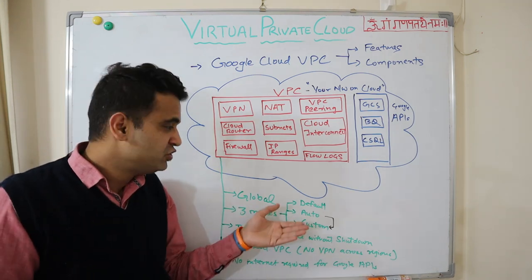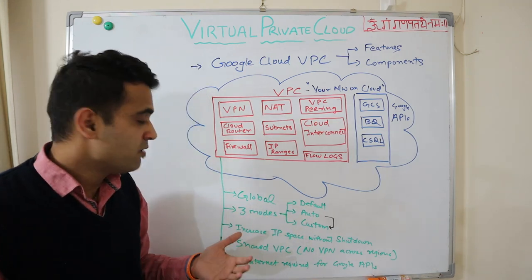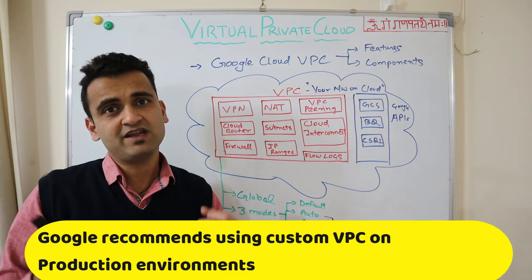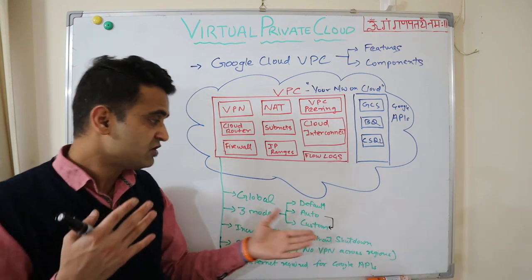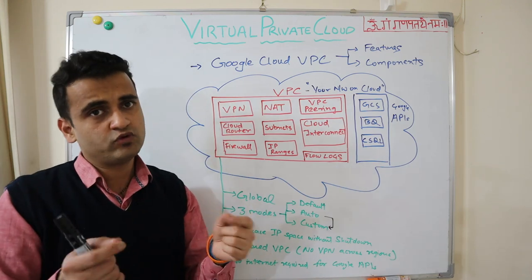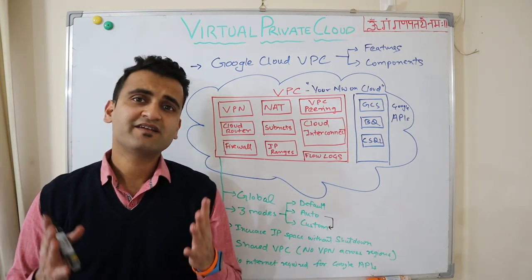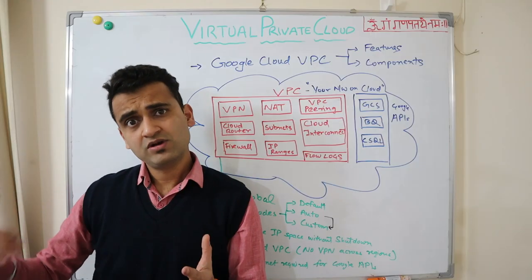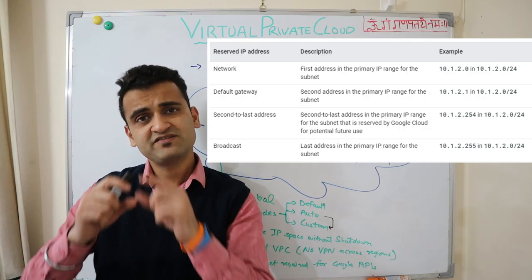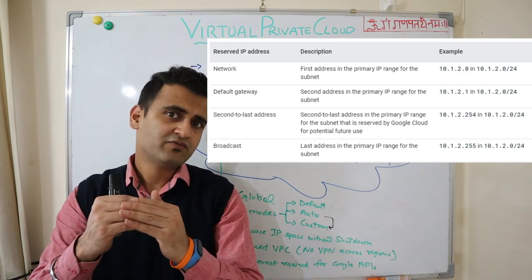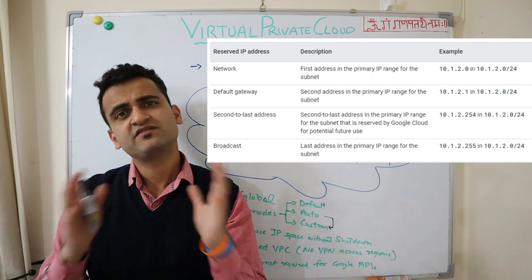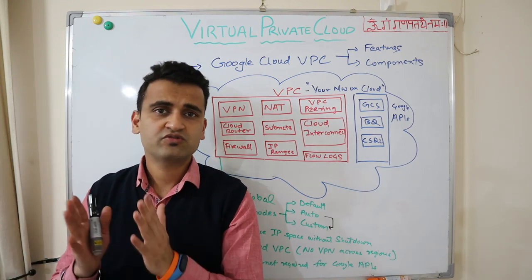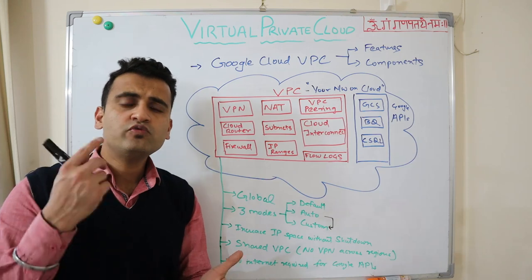There is a risk with auto mode — the subnet ranges defined automatically might overlap with your on-prem network ranges. So if you are migrating your on-prem network into Google Cloud, your subnet ranges and IP address ranges might overlap. This should only be used in development or non-production environments. Google recommends that for production environments you should always choose custom mode, where you define your own subnet ranges. The first address is your network address, the second is your gateway, the second-to-last is reserved by Google for future use, and the last is your broadcast IP.